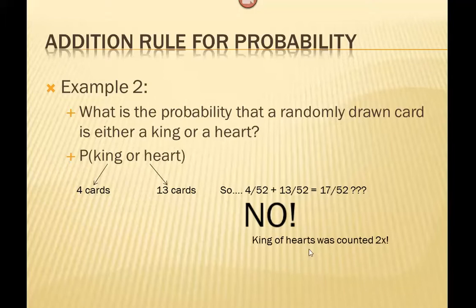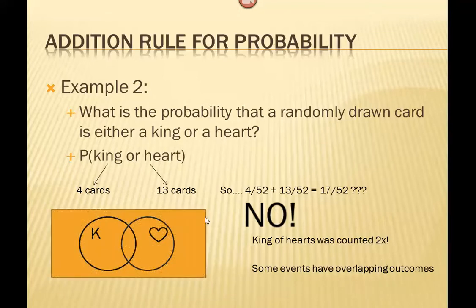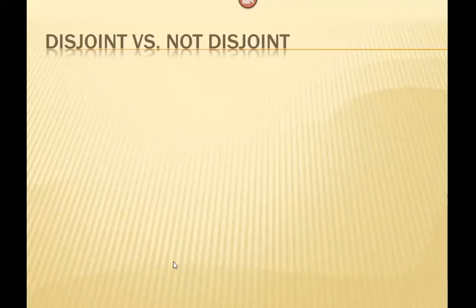Well, unfortunately, we counted the king of hearts twice. In this particular case, we have some overlapping outcomes that we can see from this picture here. We have our kings, and then we have our hearts. But because of this overlap, this means that there is one card that we might mistakenly count twice, and that's the king of hearts. We counted that king of hearts when we counted up our kings, and we counted it again when we counted the hearts. So we do have to adjust our formula a little bit. We're going to see this on the next slide.